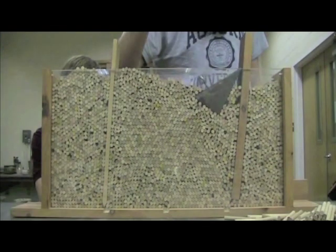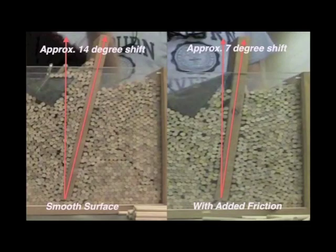Notice the wall did not shift as much because friction between the soil and the retaining wall provides greater stability. The wall with a smooth surface shifted about 14 degrees, while the wall with added friction shifted only about 7 degrees.